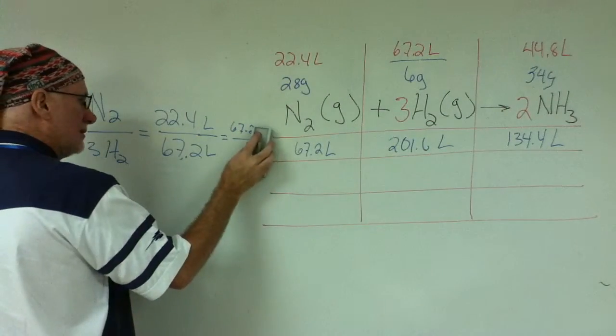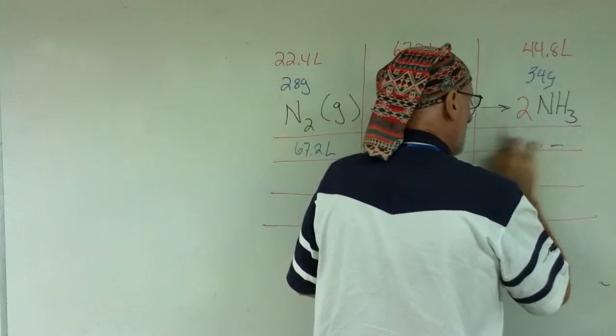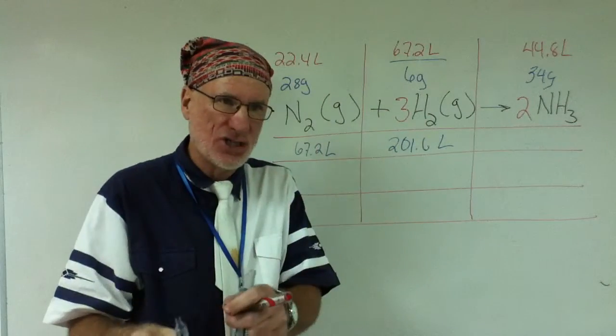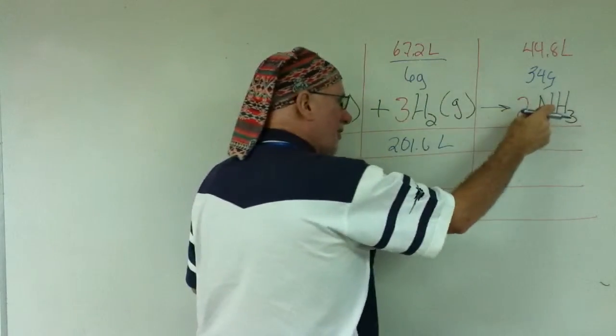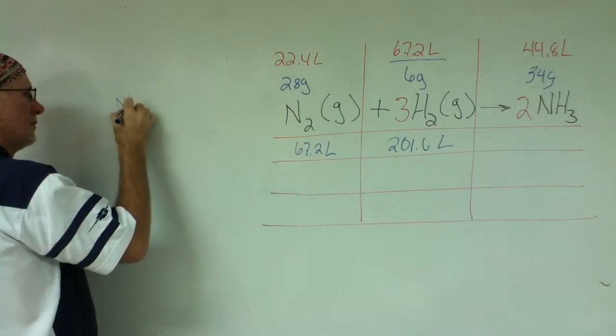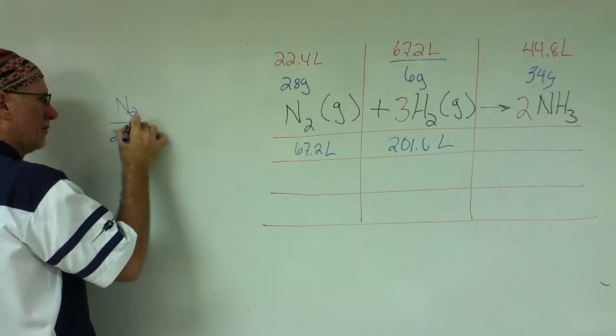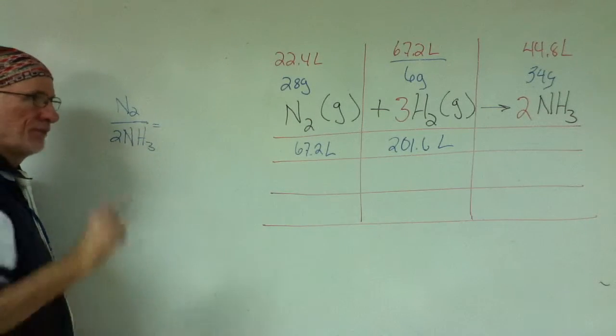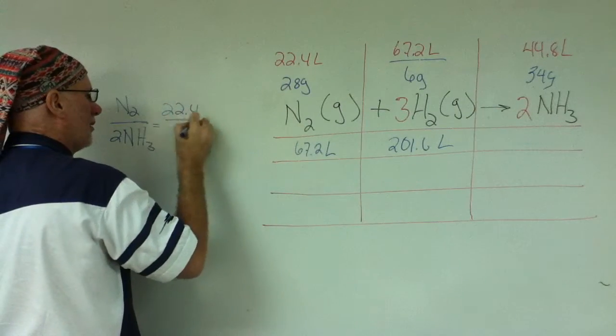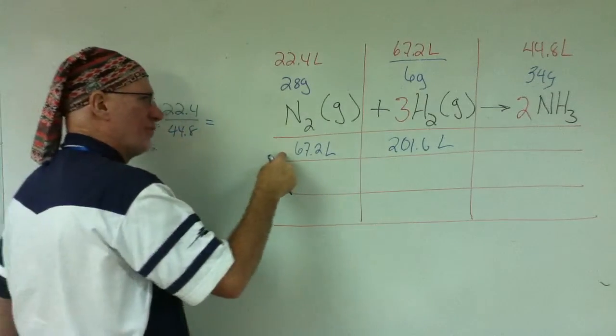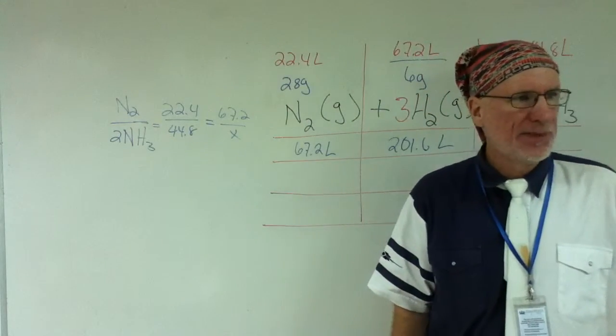So instead of 22.4 liters, I have 67.2 liters. So 22.4 is to 67.2 as 67.2 is to what? Proportional relationship. 22.4 is to 67.2 as 67.2 is to X. That's all I did. Can I erase this? Now I did the same thing to this one.